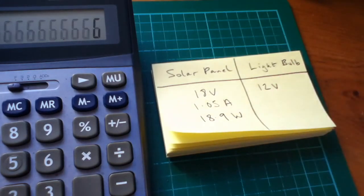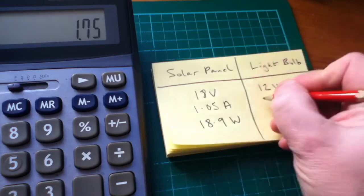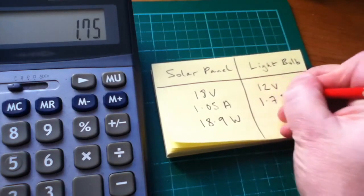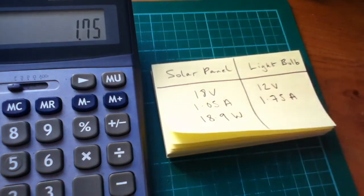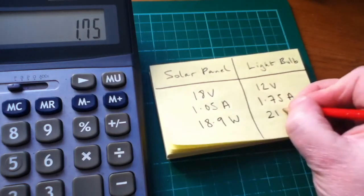Actually, it's a 21 watt. Sorry. Let's do it again. 21 divided by 12. 1.75. That's more like it. 1.75 amps. And, of course, the wattage is 21 watts.